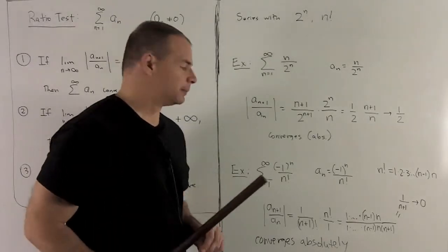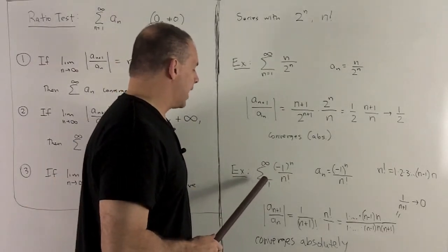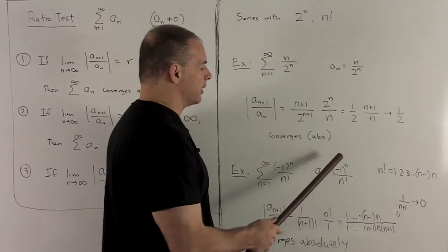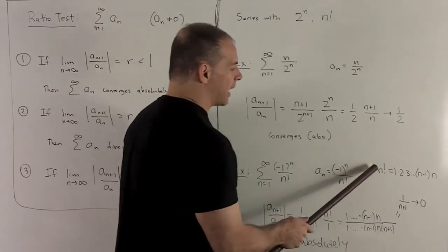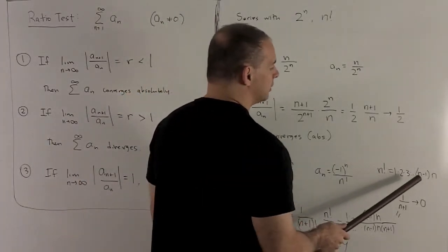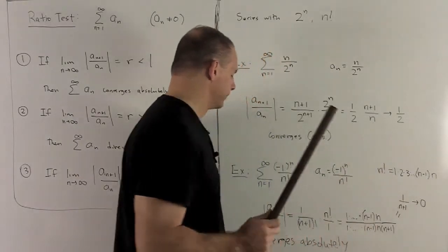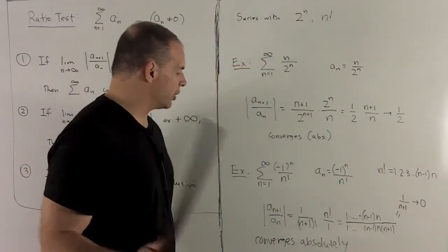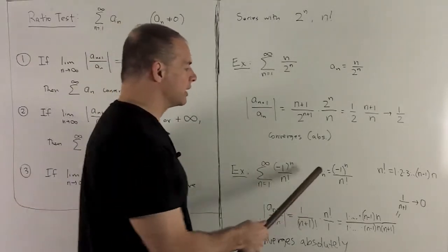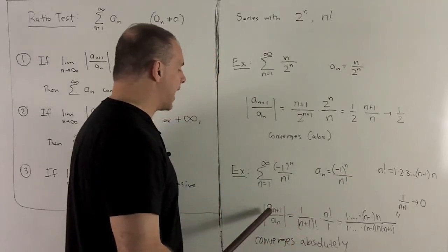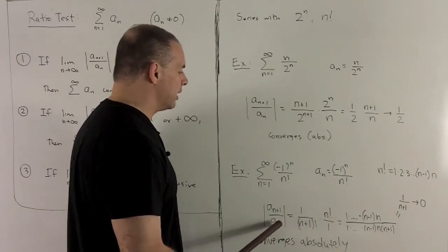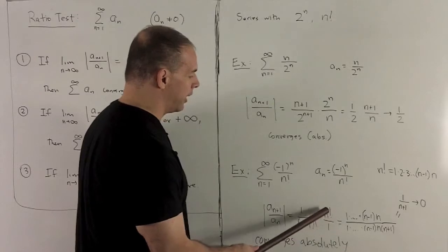Let's try an example with a factorial: the sum from n=1 to infinity of (-1)^n over n factorial. So a sub n is (-1)^n over n factorial. Remember, n factorial means we multiply all the numbers between 1 and n: 1 times 2 times 3, and so on, up to n-1 times n. Taking the ratio, a sub n+1 over a sub n in absolute value means we can throw away all the minus sign stuff. So a sub n+1 is 1 over (n+1) factorial, and a sub n, flipping it over, is 1 over n factorial.